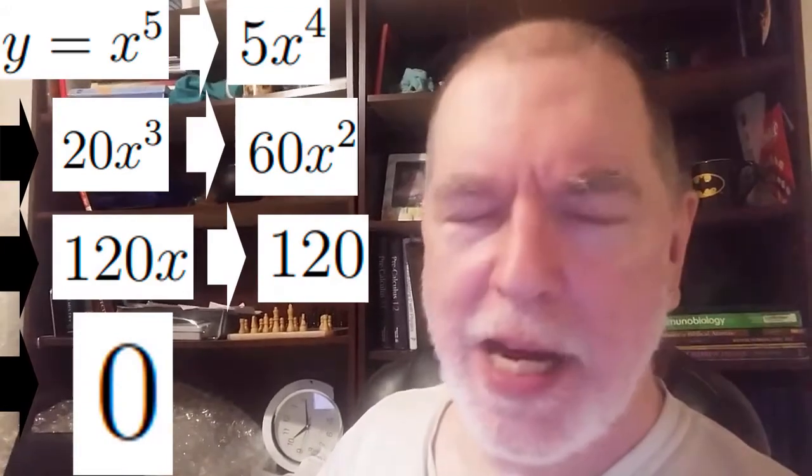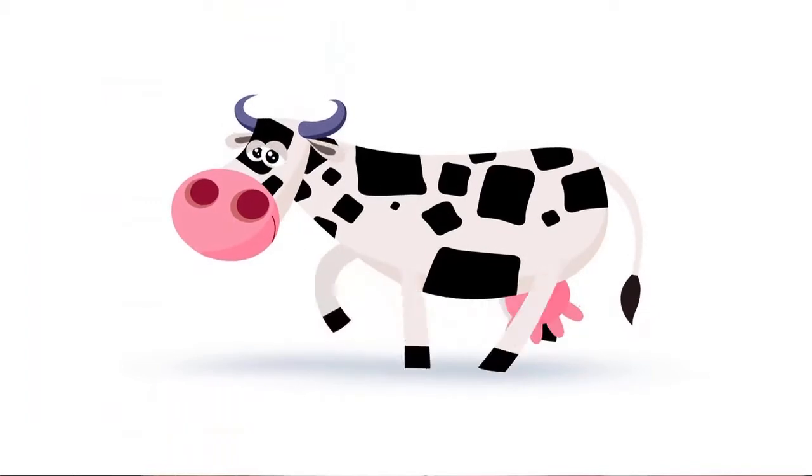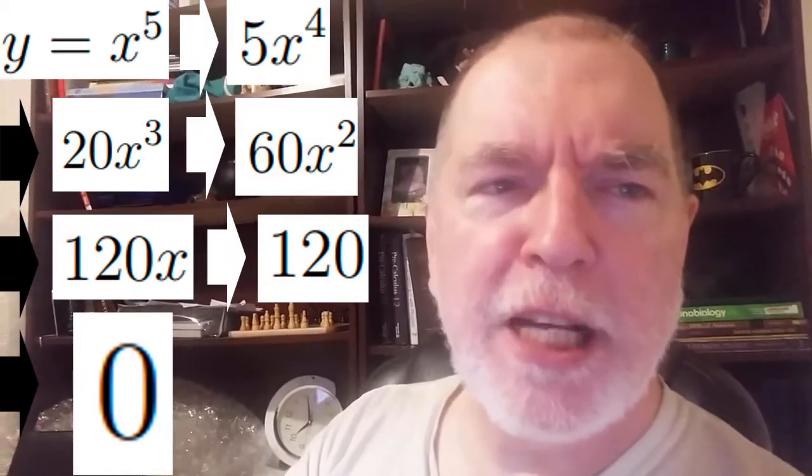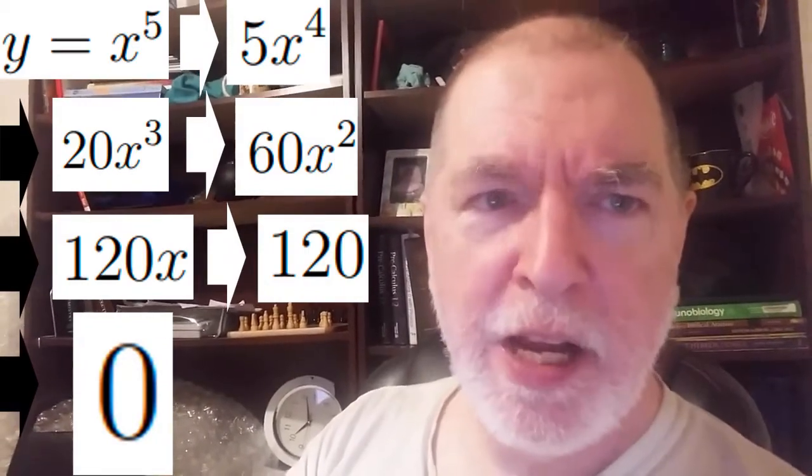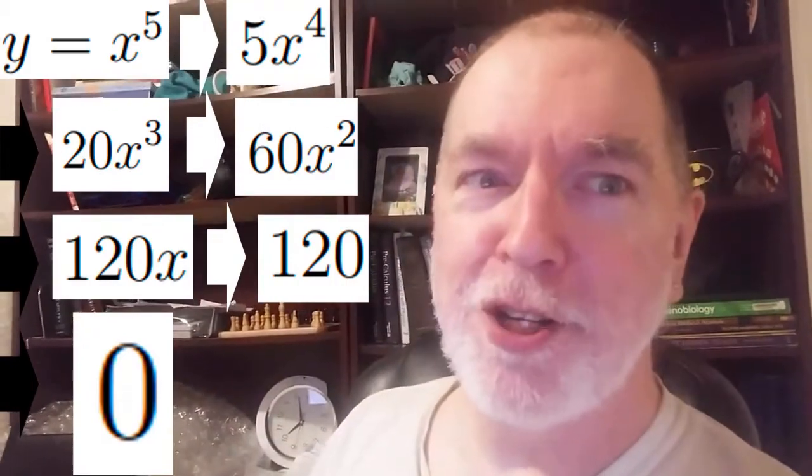And then we can differentiate that 0 until the cows come home. And then let the cows do some differentiating themselves. It's always going to be 0. So we have differentiated this function into oblivion. You can't do that with any function, but this function we did it.